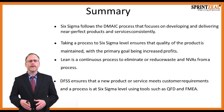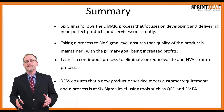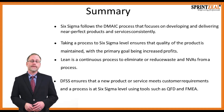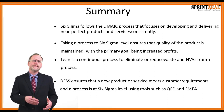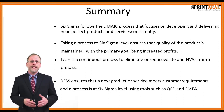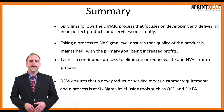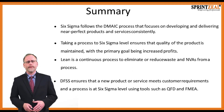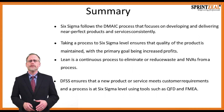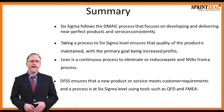Here's a quick recap of what we've learned in this lesson. Six Sigma follows the DMAIC process that focuses on developing and delivering near-perfect products and services consistently. Taking a process to Six Sigma level ensures that the quality of the products is maintained, with the primary goal always being increased profit. Lean is a continuous process to eliminate or reduce waste in non-value-added activities. Design for Six Sigma ensures that a new product or service meets customer requirements and a process is at Six Sigma level, using tools such as QFD, or Quality Function Deployment, and FMEA, or Failure Mode Effect Analysis.